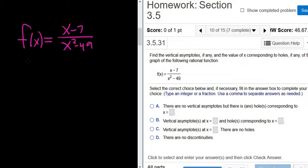So first, we start by looking for holes. You can find holes by canceling. We have x minus 7, and in the denominator, we have x minus 7 times x plus 7. That's the difference of squares. So the x minus 7 cancels, and we're left with 1 over x plus 7.